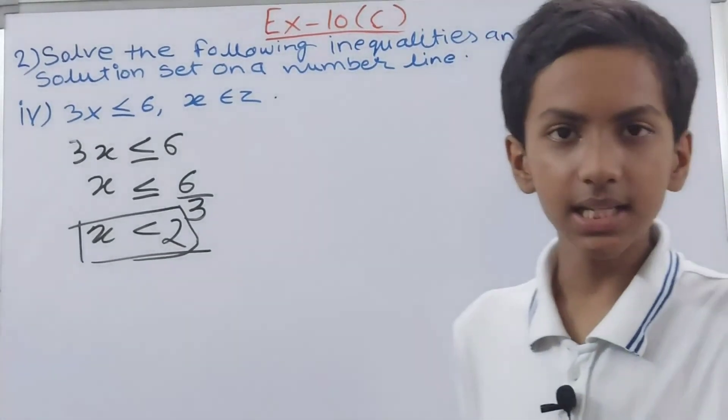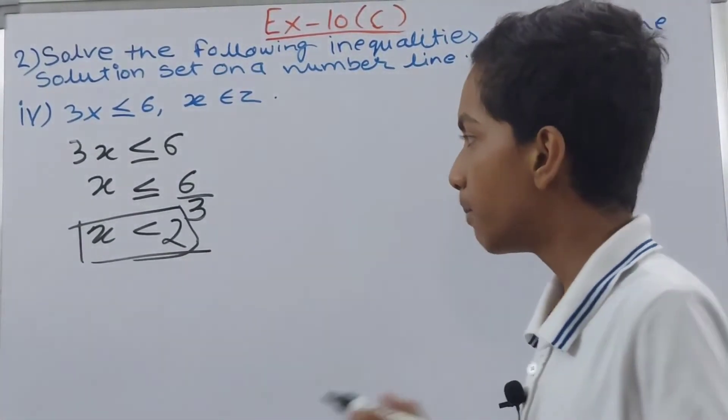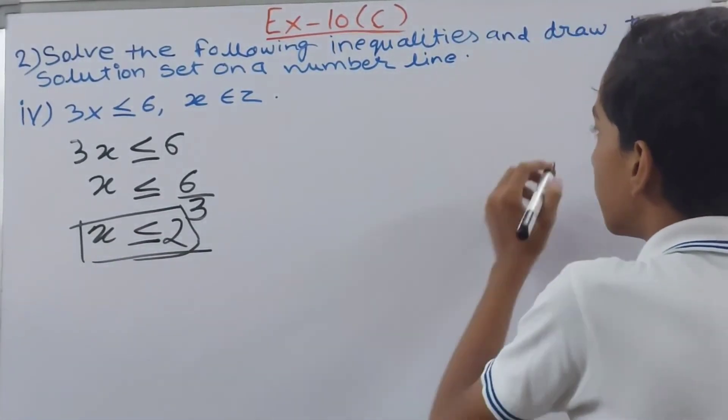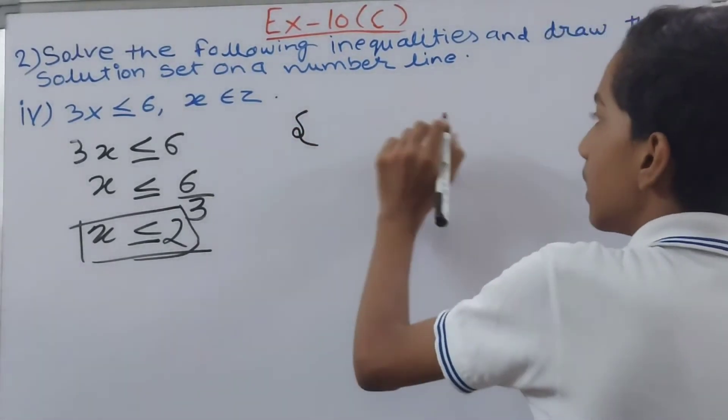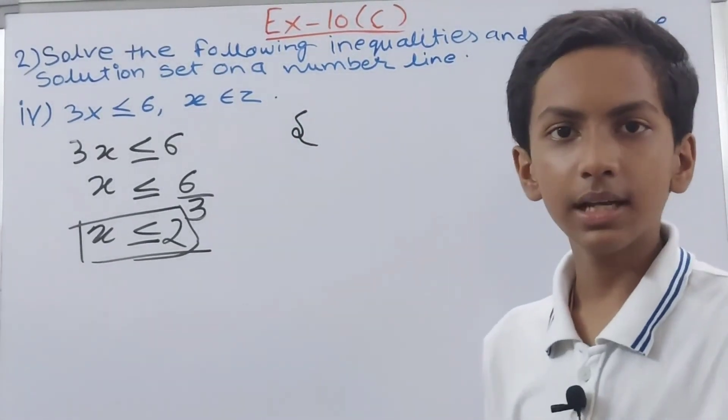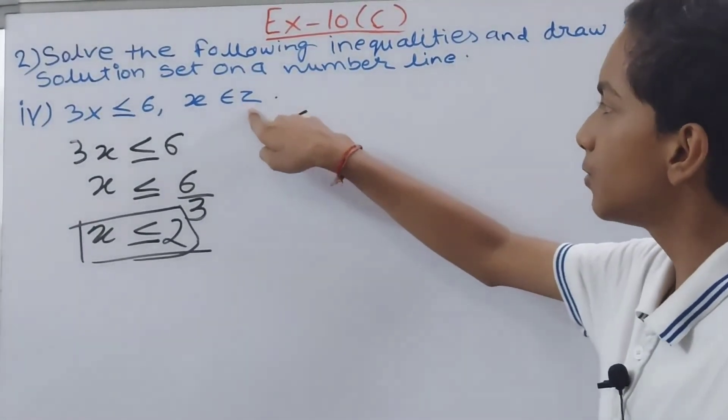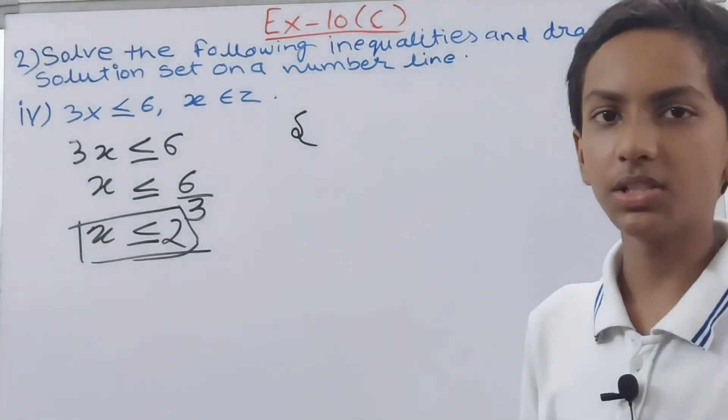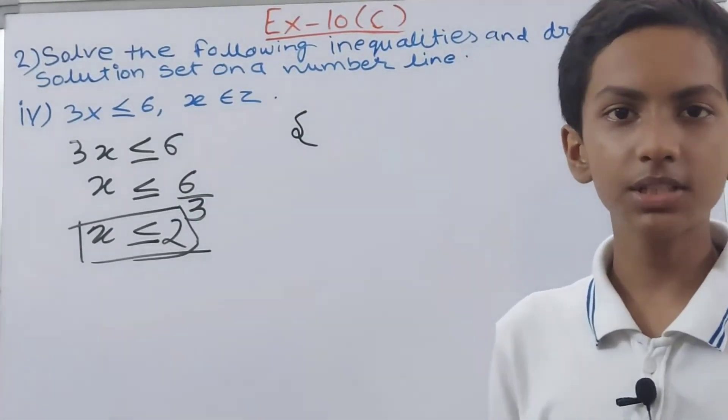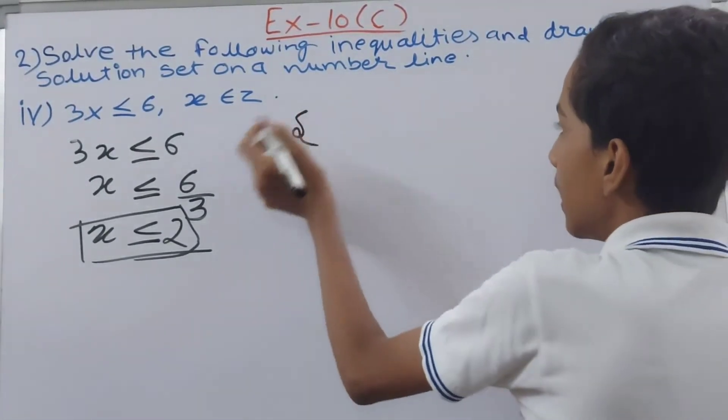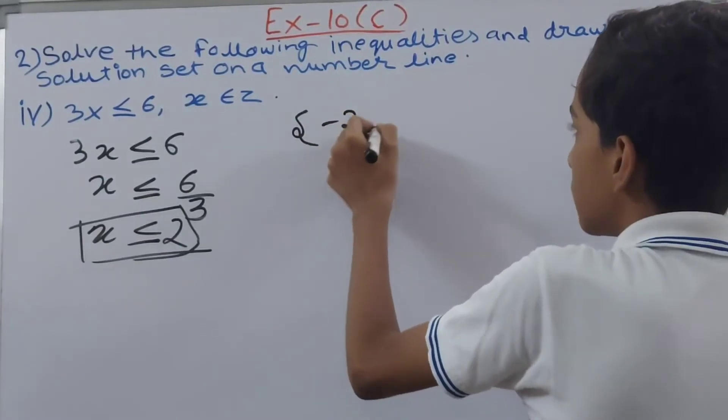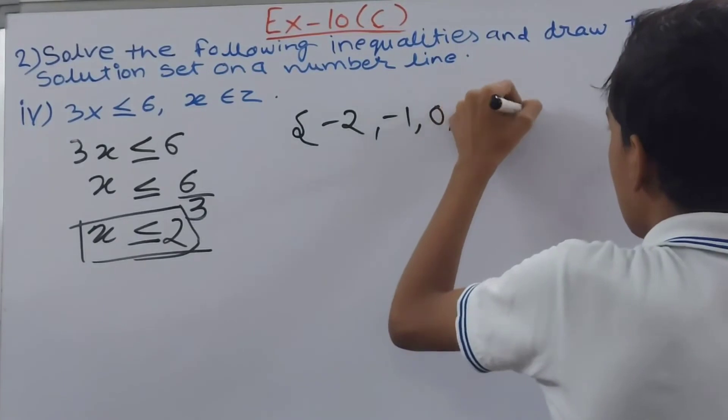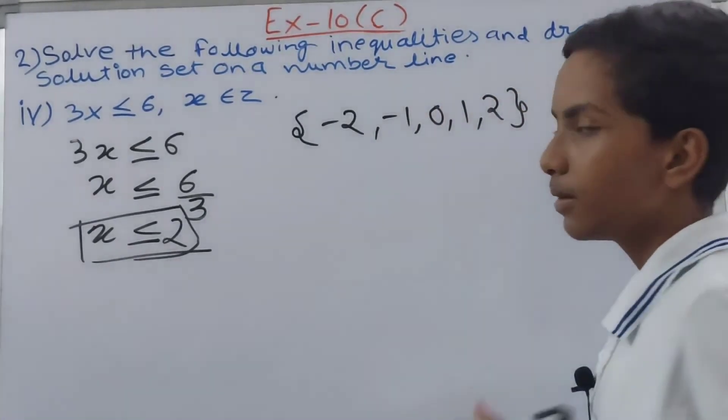Now you see that this is telling us that value of x has to be less than or equal to 2. So you write the solution set in the curly brackets. You can start from any negative number. Why so? Because here x belongs to Z. This Z is integers. Z or I means integers, N means natural numbers, R means real numbers, W means whole numbers. Now in this you start from any integer, I will start from minus 2, minus 1, 0, 1 and 2. And you close the set. Just that simple.